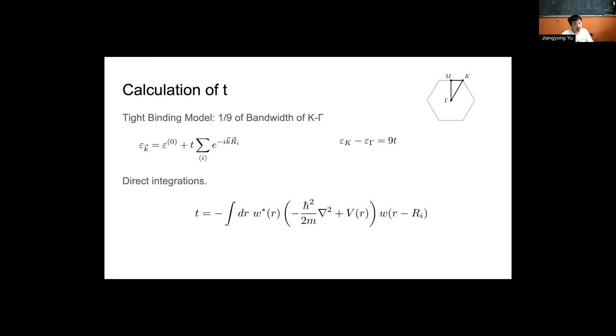We actually have a way of confirming this result as well. For zero strain, the tight binding model gives us a nice result, which is that the energy at the K point to the center of the lattice is 9T. And we can confirm this.